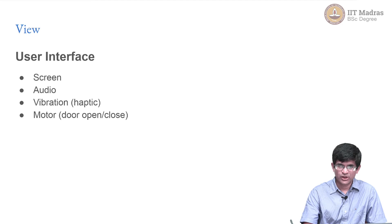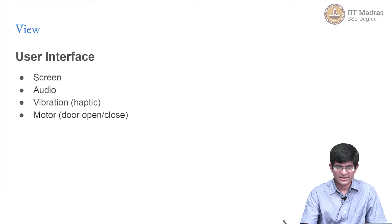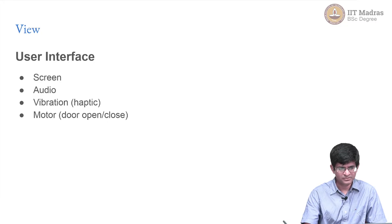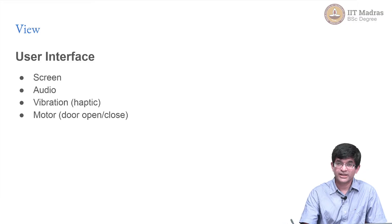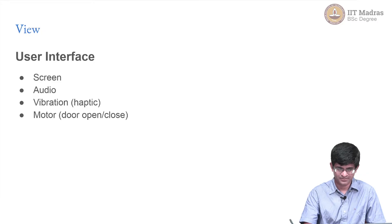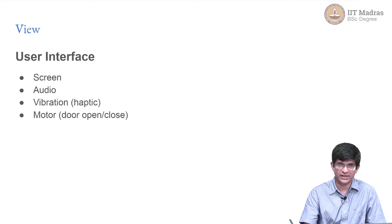There are a couple of things to keep in mind here. A view consists of two parts in some sense. One is the user interface — this could be a screen which displays something for a person to look at, audio feedback, or vibration and haptic feedback, which basically means touch-based feedback.